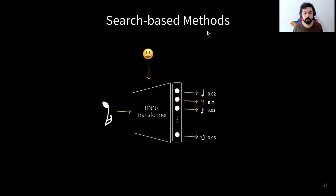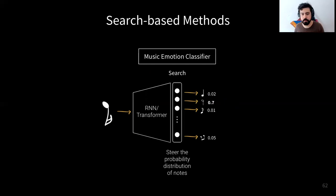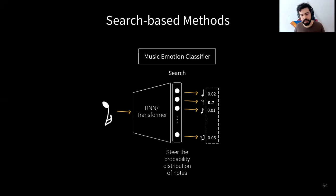In our work, we have a music emotion classifier — a second model that guides a search procedure — and the goal of this procedure is to steer the probability distribution of the notes of the language model. We try to do that in two ways: first by optimizing the weights of the neural network before music generation, and second by steering the probability distribution of the language model with the music emotion classifier at generation time.